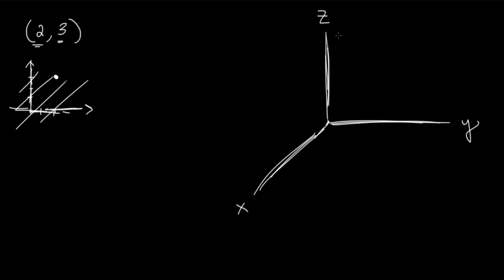We want to add a third dimension. If I'm going to plot a point in three dimensions, I need a point. Let's go with (1, 2, 3). If I want to plot this point in space, these numbers represent something. The 1 represents the distance I'm going to go in the x direction, the 2 represents the y direction, and the 3 represents the z direction. But in order to graph those, we need to conventionally decide on what direction x, y, and z are.